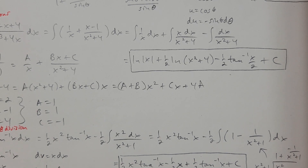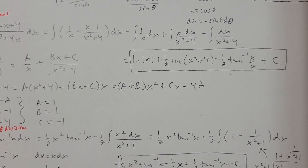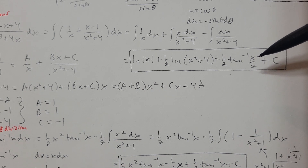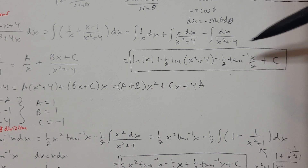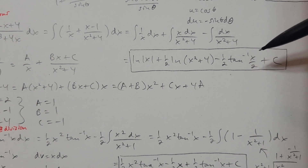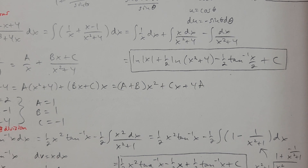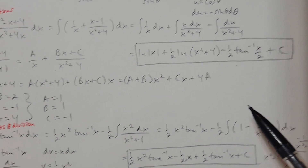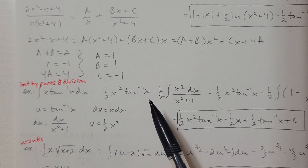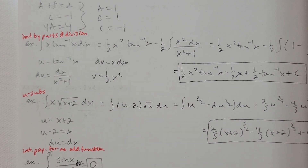A common mistake is to forget the divided-by-2 at the end — it's 1 over a times arctan of x over a, where a is 2. So the full answer is ln|x| plus 1/2 ln(x squared plus 4) minus 1/2 arctan(x over 2) plus C. We'll go ahead and stop there in the notes, and I'll pick up with the next one in the next video. Thank you.